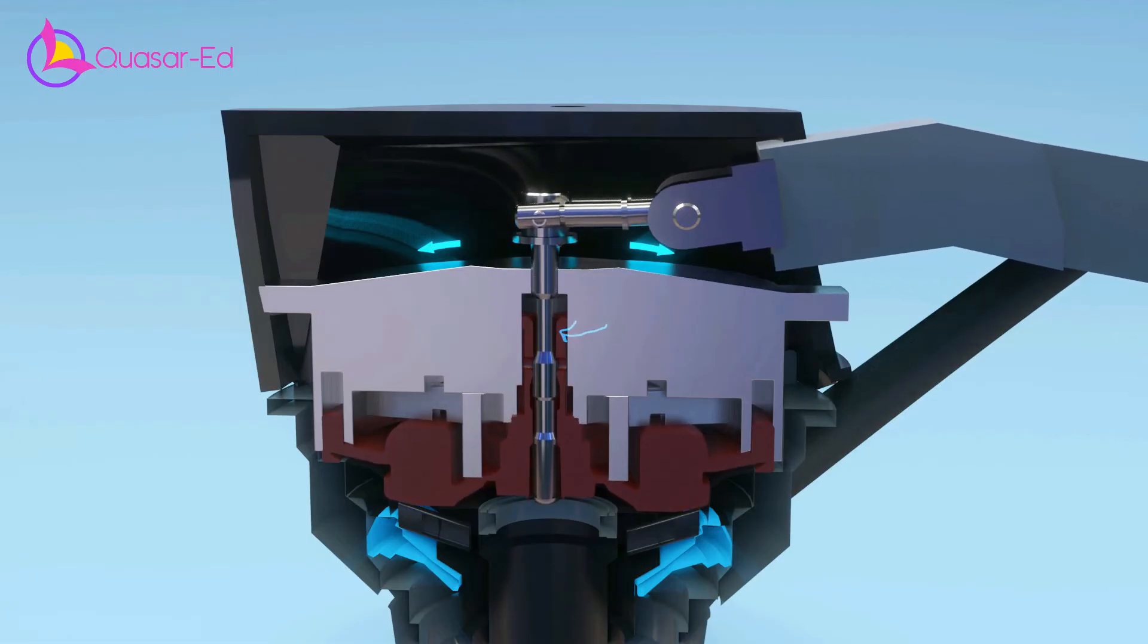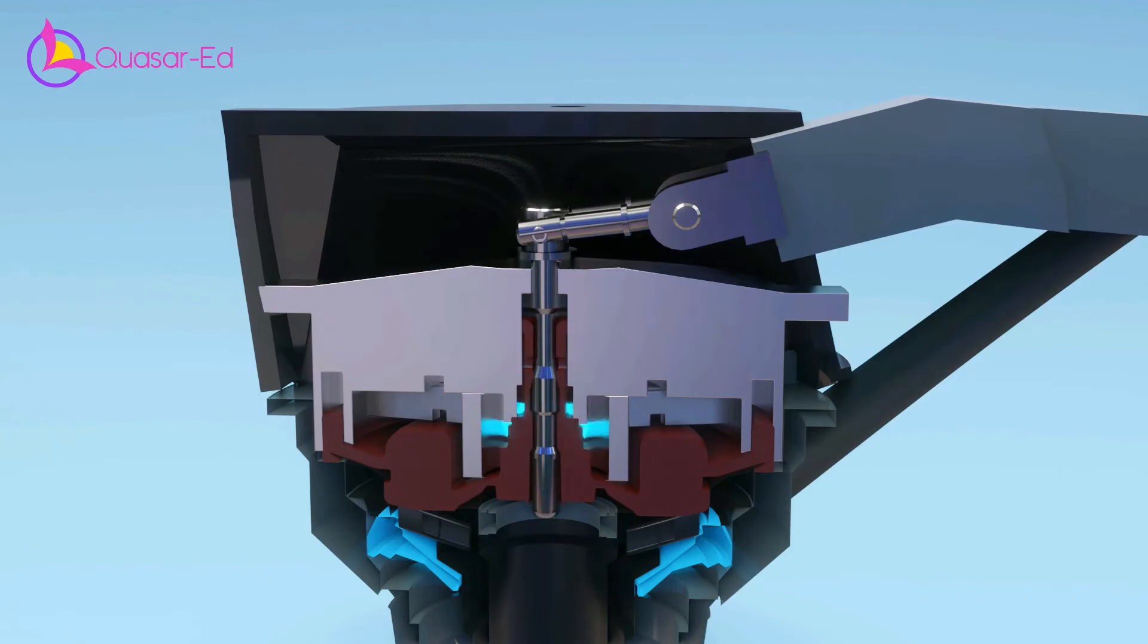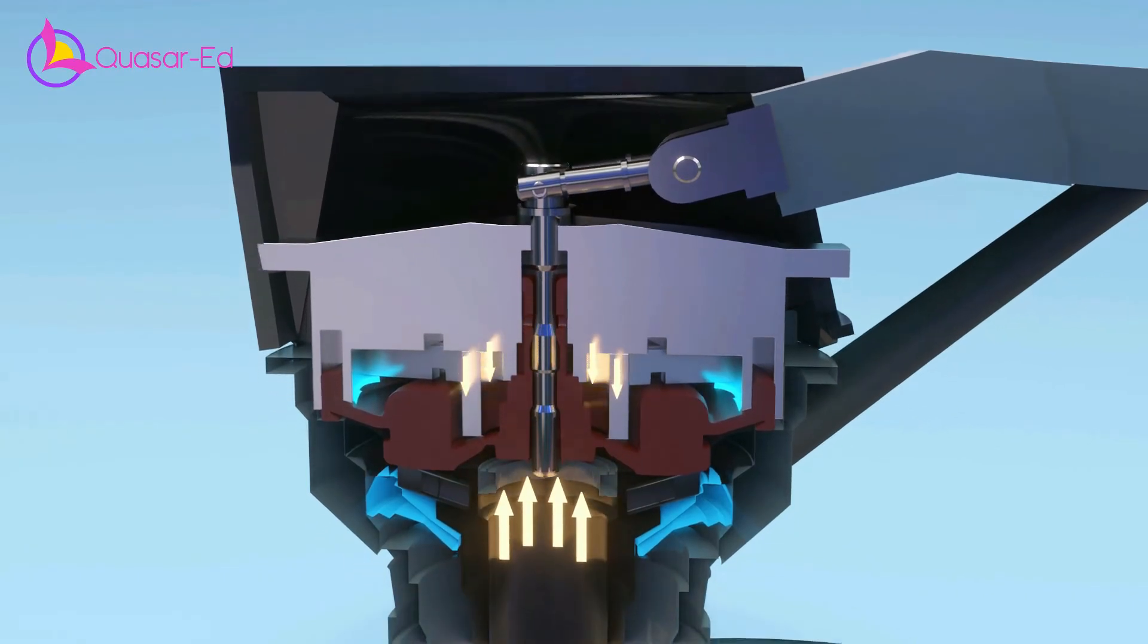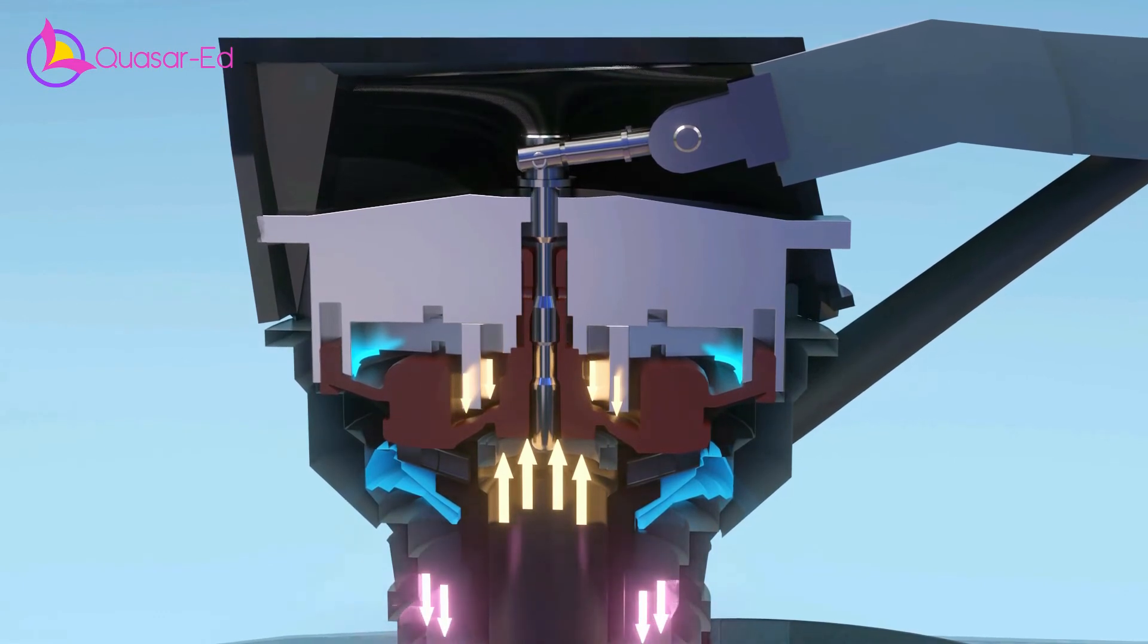When the water level reaches its maximum height, the steel pin's narrow section aligns with the diaphragm hole, enabling the high pressure water flow inside the diaphragm. Since the water pressure over the diaphragm and under the diaphragm are the same, the diaphragm closes down the water inlet.